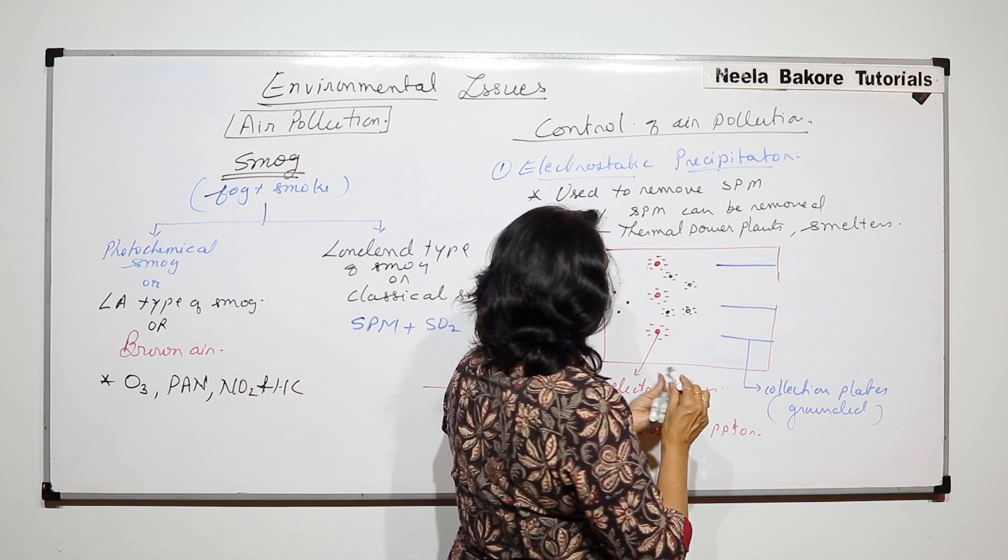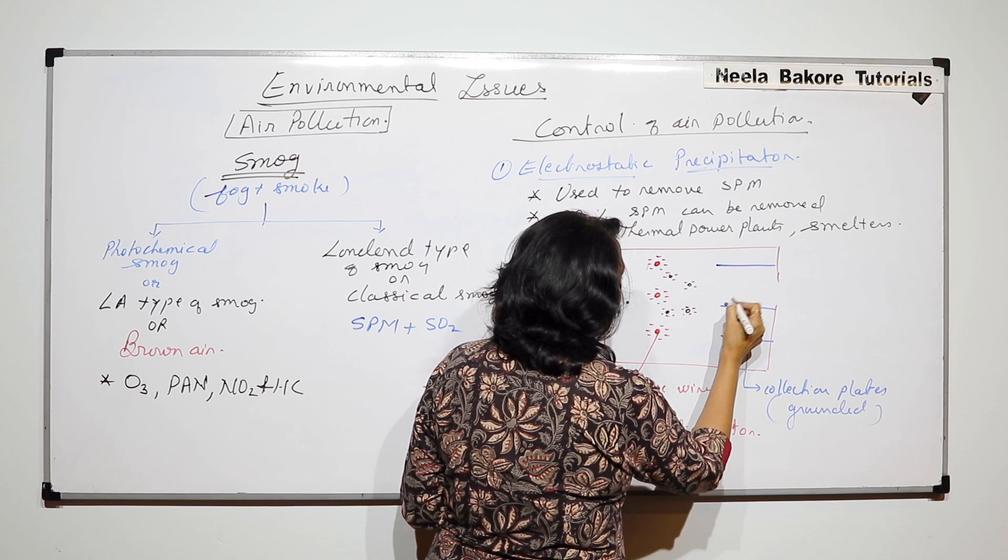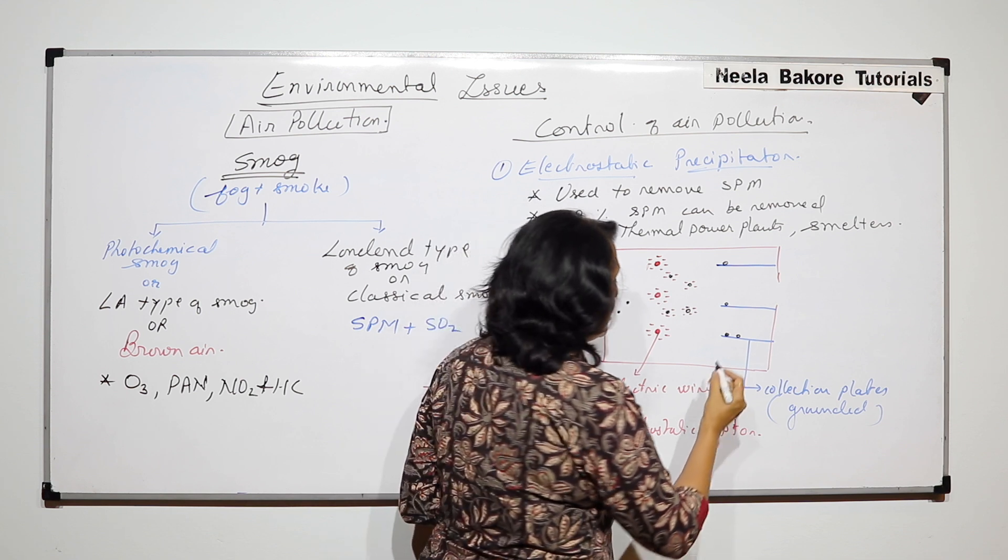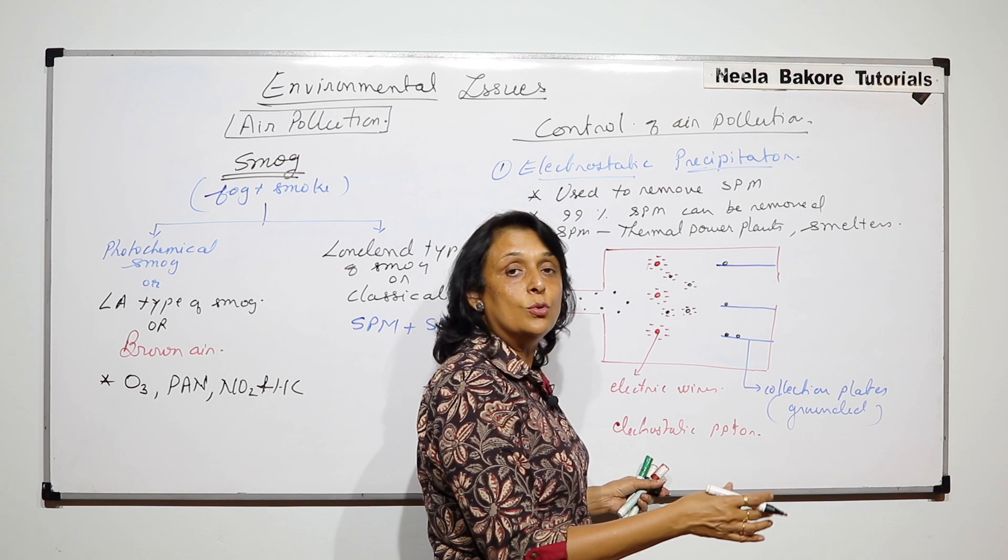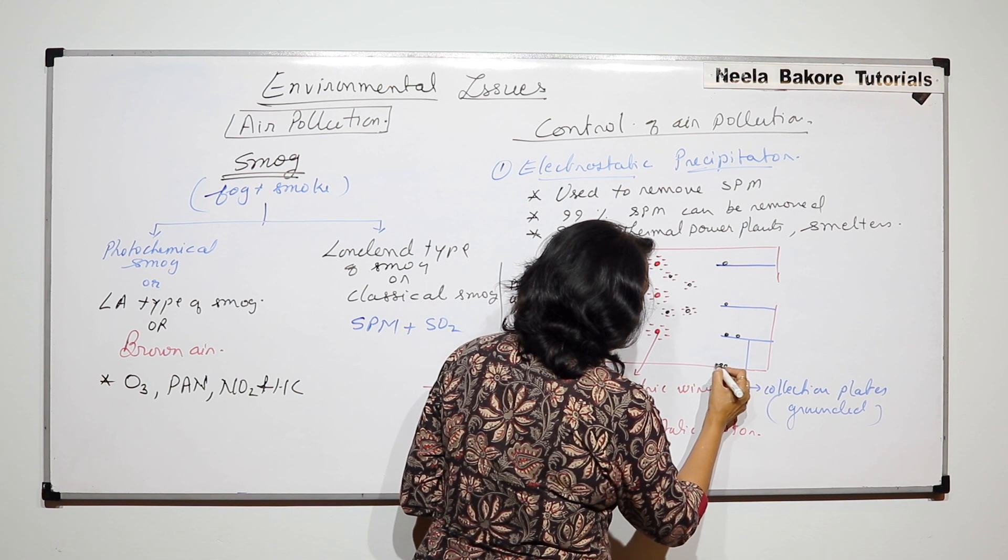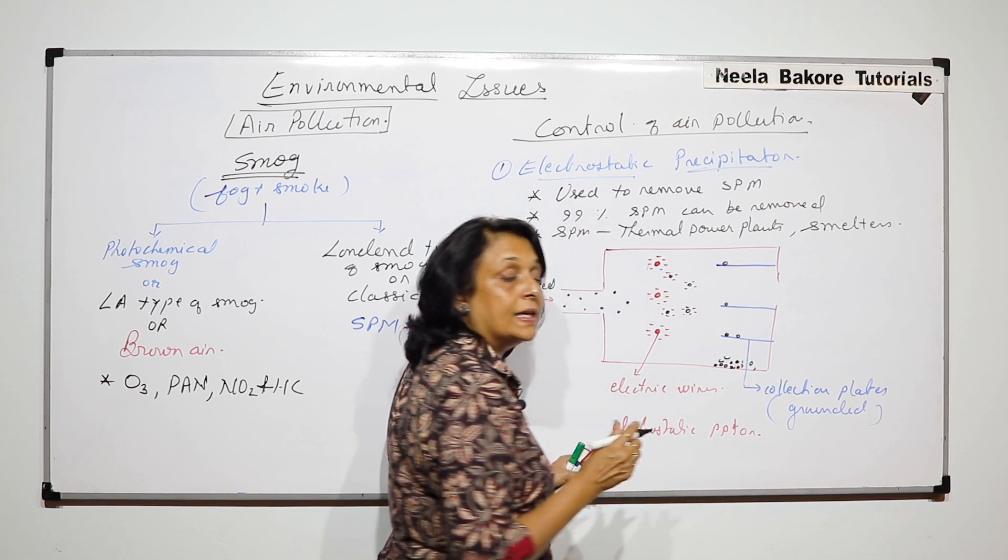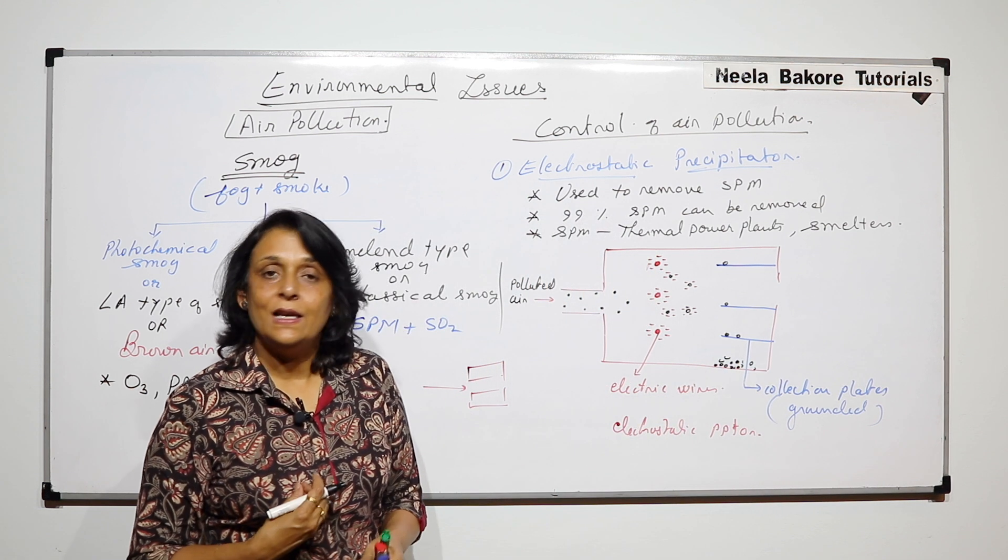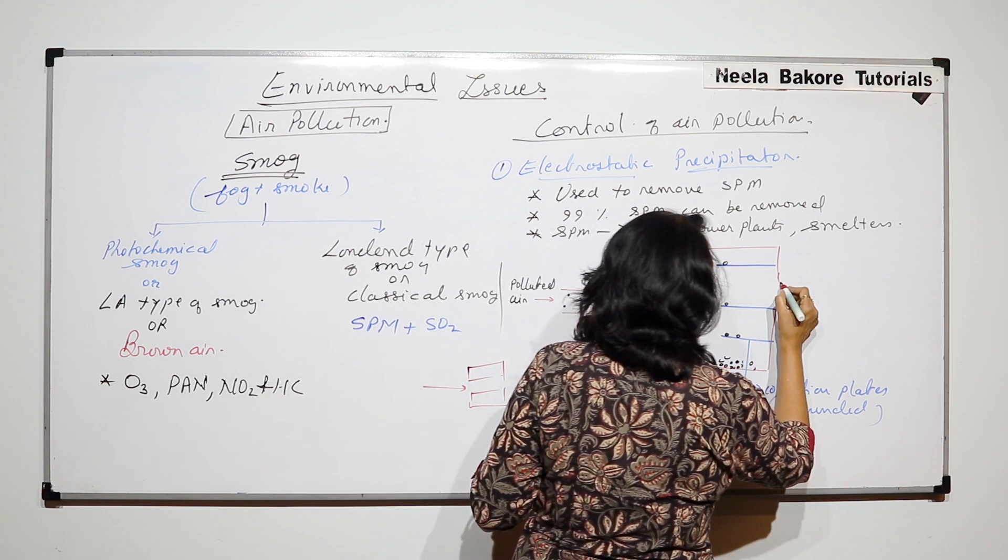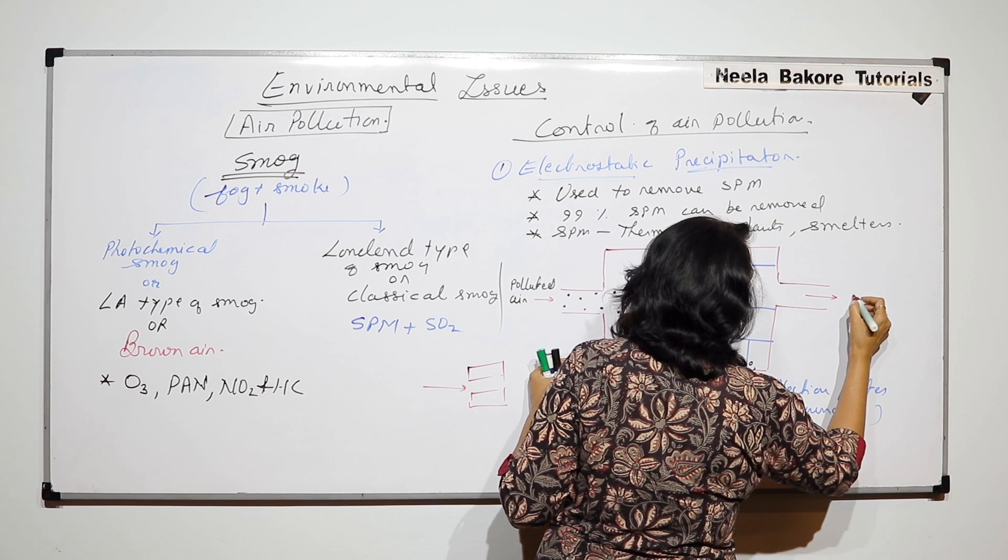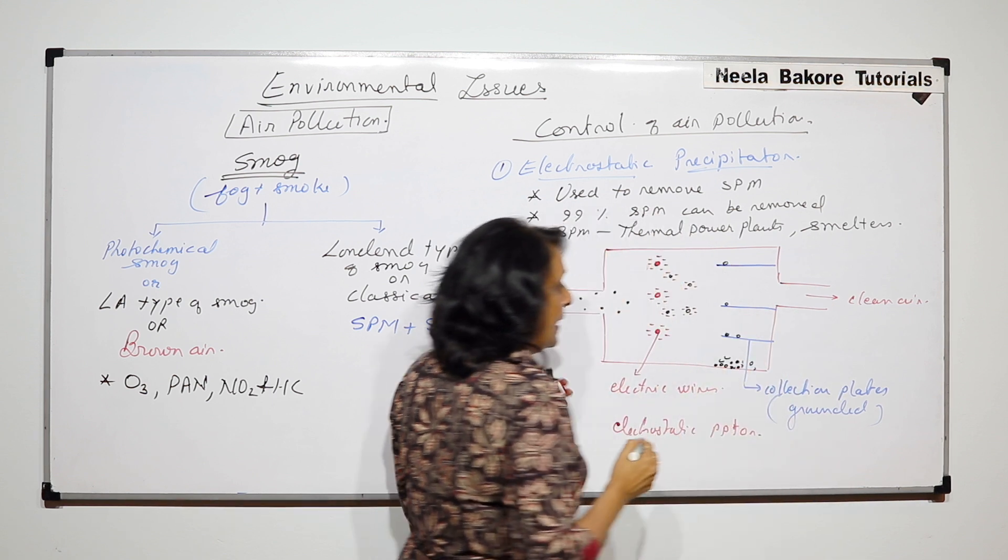So now when these dust particles come here, they lose their charge because the electrons are getting conducted to the ground, and these dust particles will fall here. This dust can be collected later on and the air which escapes this electrostatic precipitator is clean air.